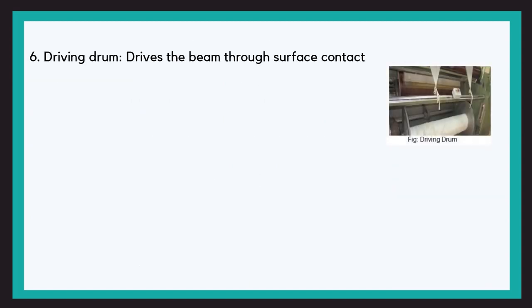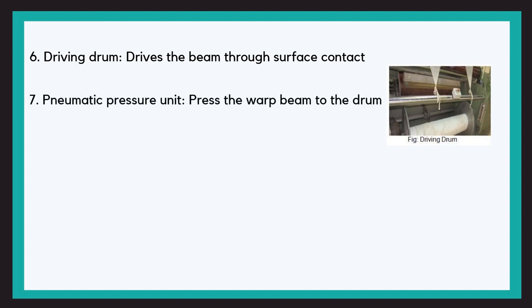Now in case of an indirect drive, the driving drum drives the beam through surface contact between the two. The pneumatic pressure unit, when there is a driving drum, presses the warp beam to the drum so that there is contact between the two at all times.